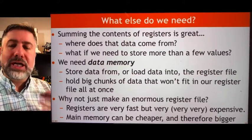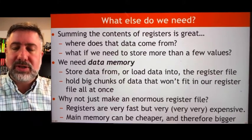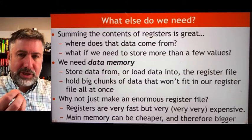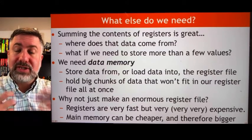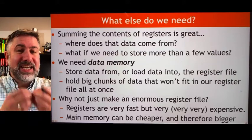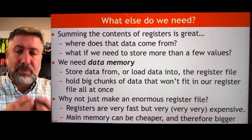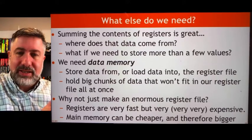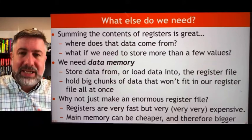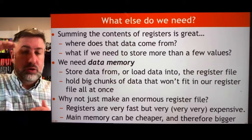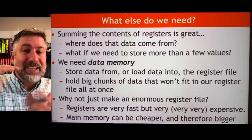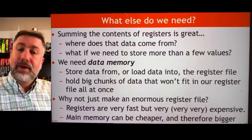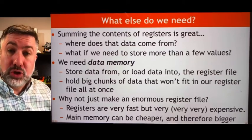We need data memory to look up the data, and this is another theme in CPU design: the separation of instruction and data. Instruction information is a collection of ones and zeros that tells the machine what to do, while data memory is the actual contents of the information we're processing. When we're adding up numbers in an array, the data memory is the array itself. The instruction memory is the list of things to do — where we are in the array, what information we're adding, are we done — all that is on the instruction side. We're going to need to add data memory to our computer.